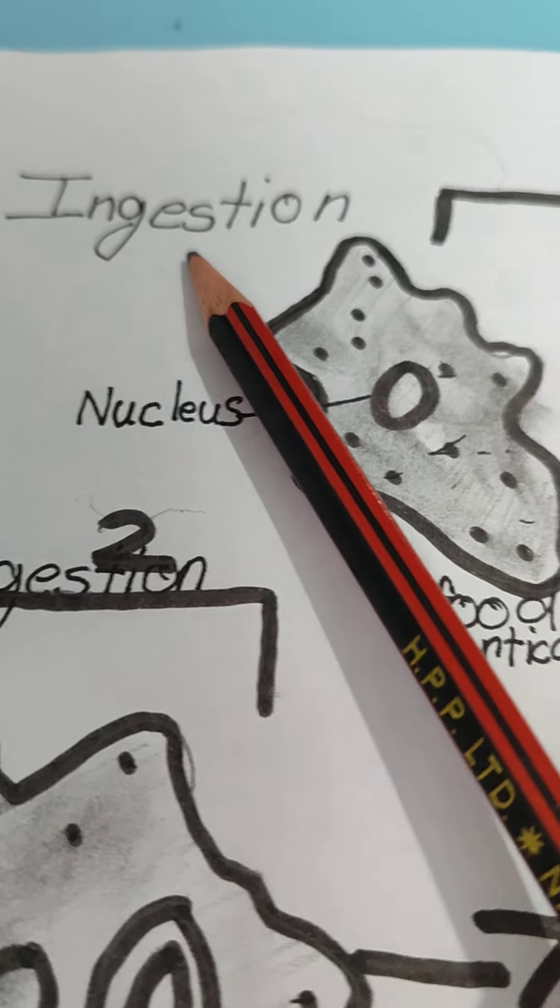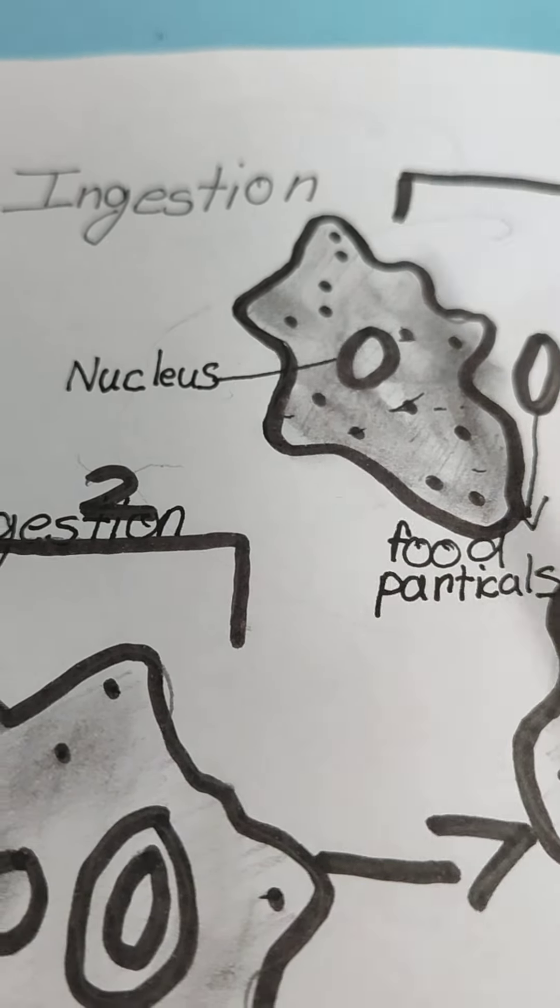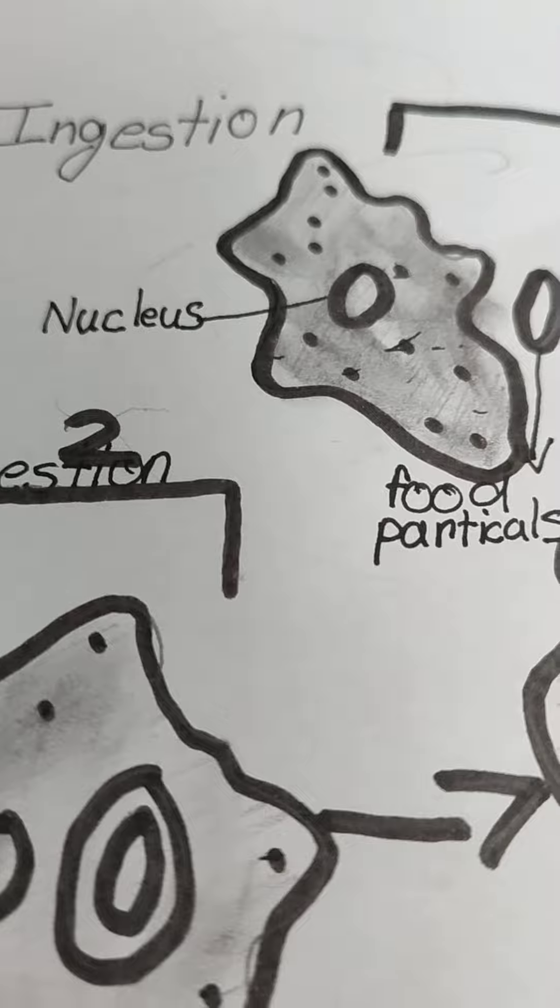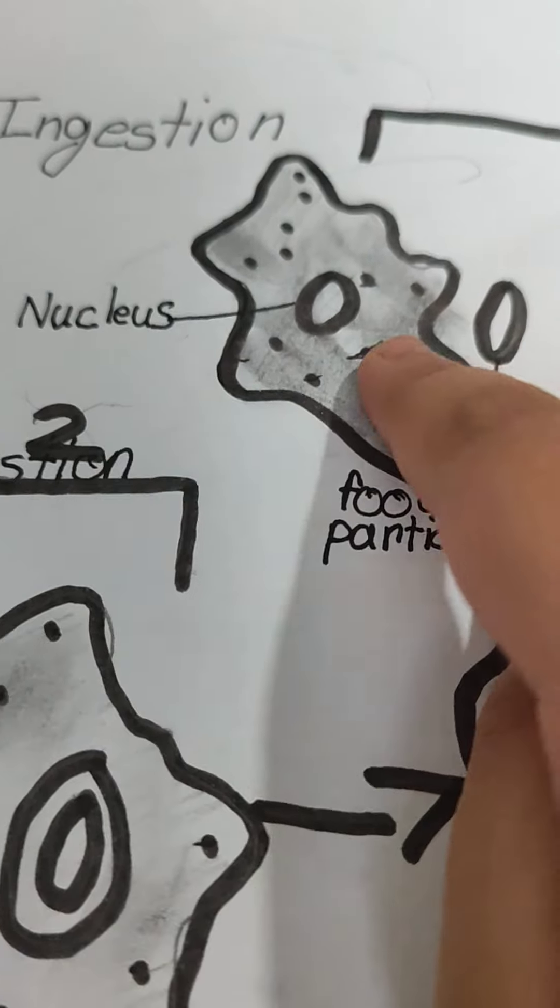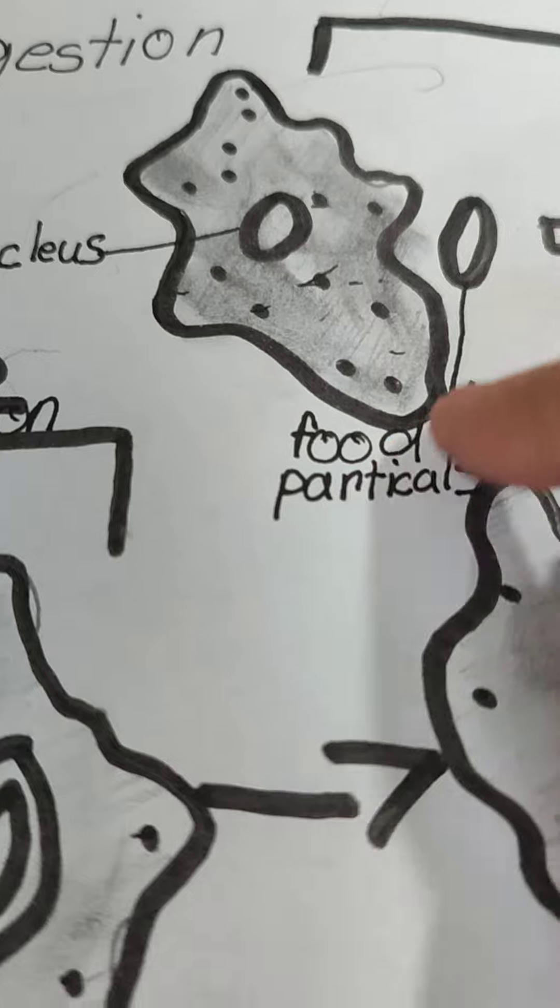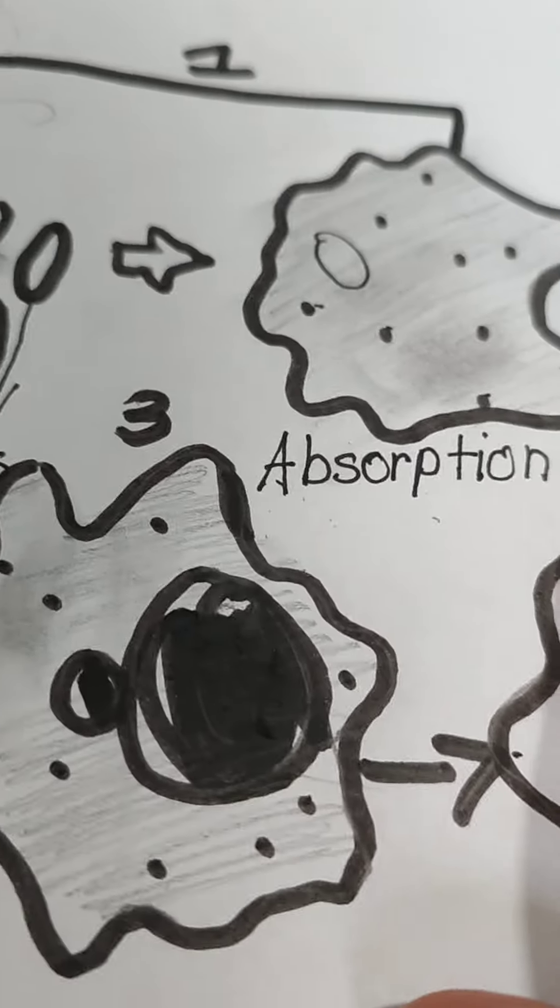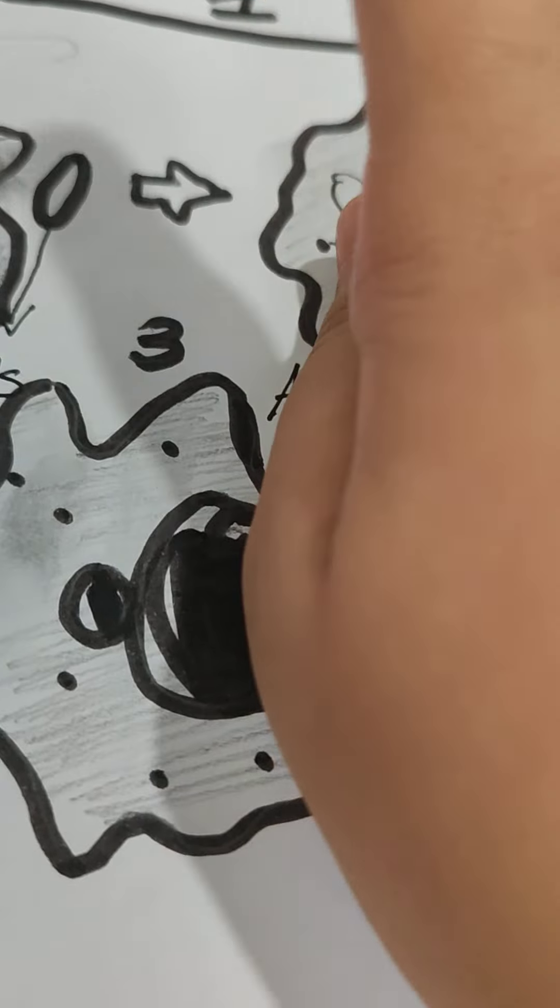Ingestion means the food is taken inside the amoeba. Here you can see the round one—this is the amoeba. Inside the amoeba we have the nucleus. The food particles are near the amoeba. This is the first step of digestion.